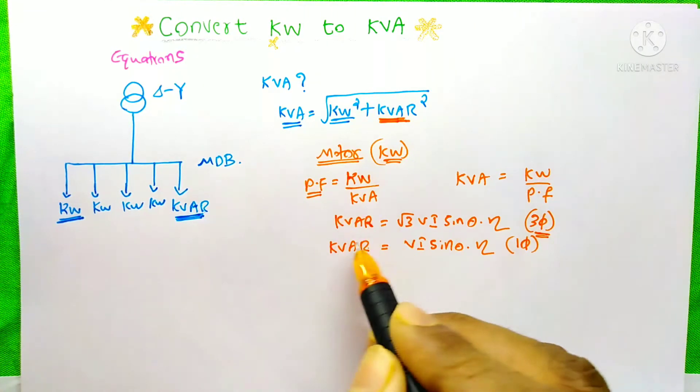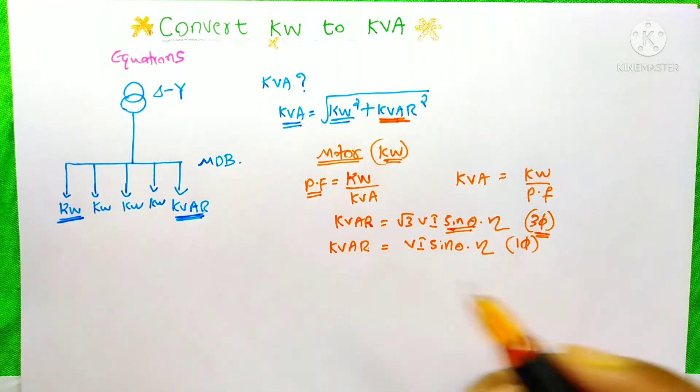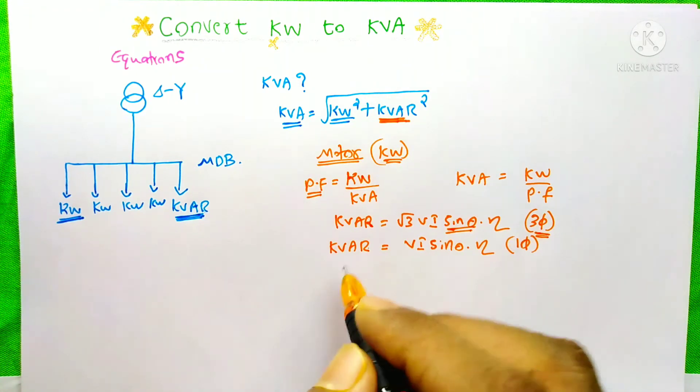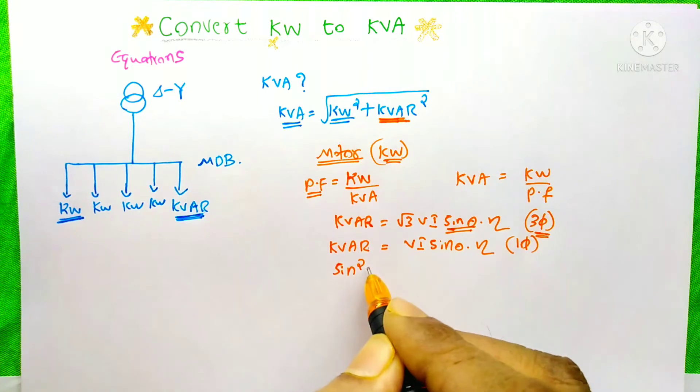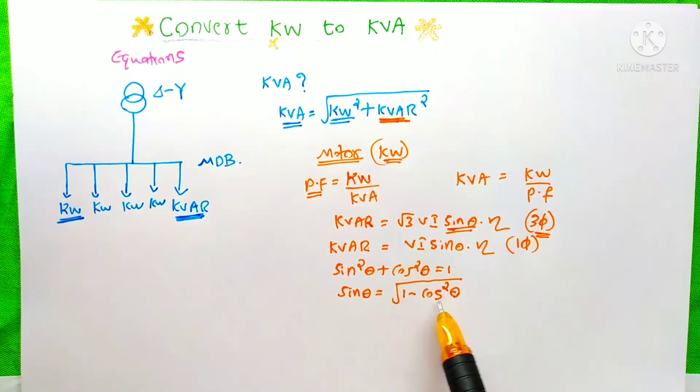So, to find this kVAR, we need this sine theta. How to find this sine theta? We can use the equation sine squared theta plus cos squared theta equals 1. Then sine theta equals root of 1 minus cos squared theta.